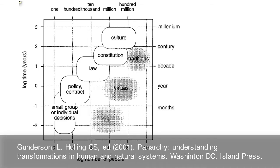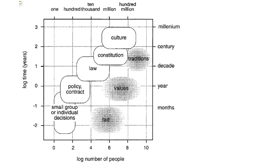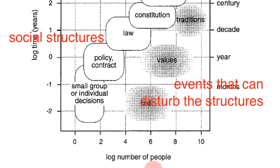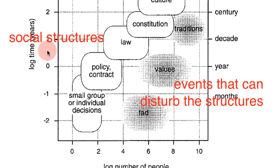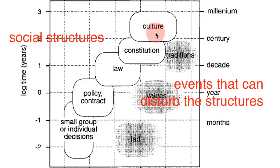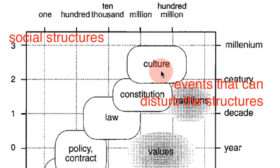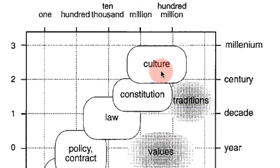A socioeconomic system would look more like this. Here the axes are the number of people involved and the turnover time. So culture exists at the level of millions of people. It can last for hundreds to thousands of years. The subsystem beneath the culture might be a constitution.